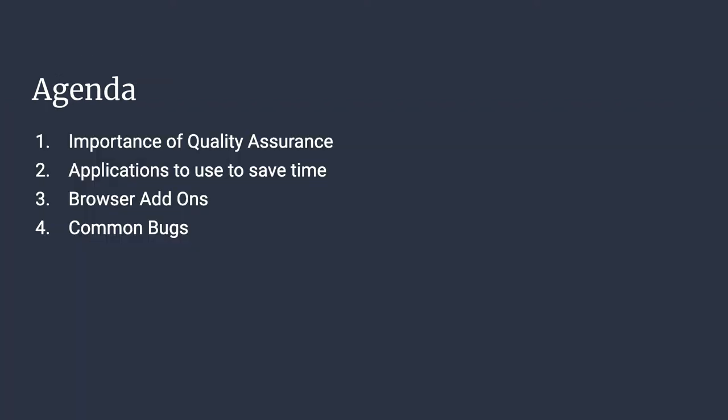Today we are going to talk about the importance of quality assurance briefly, then we'll talk about applications to help with that, discuss a couple of browser ones, and talk through common local bugs. Each of these lines could be a separate talk. Our goal is just to aggregate whatever information we have to give you quick tips on how to get quality to an appropriate level with minimum cost.